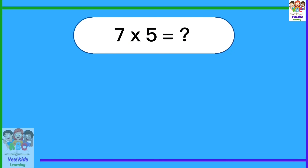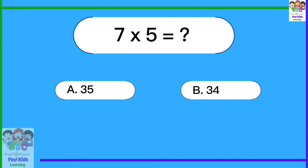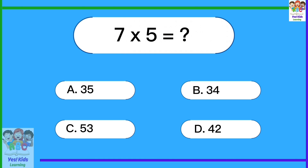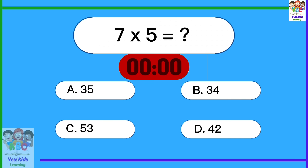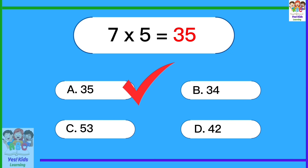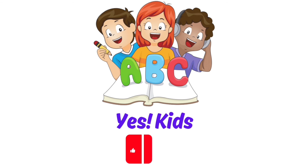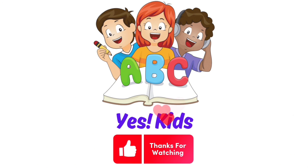7 times 5 equals? 35. 7 times 5 equals 35.